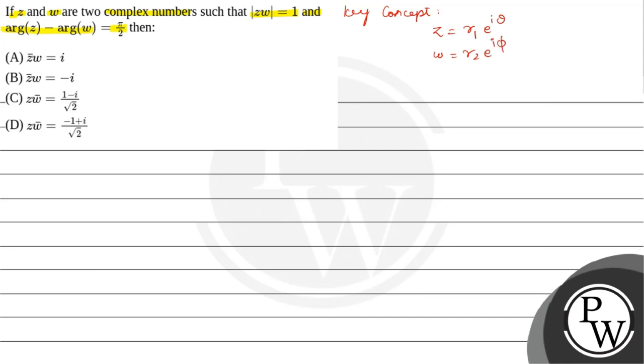If Z is R1 e power i theta, Z bar will be equals to R1 e power minus i theta. Now let us use this and solve this problem.